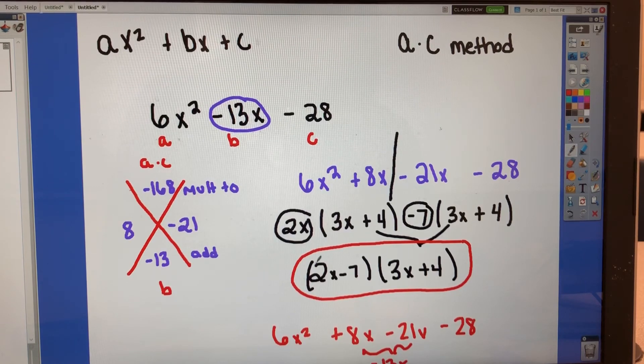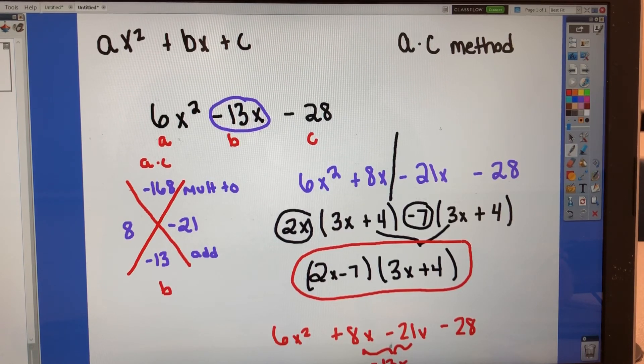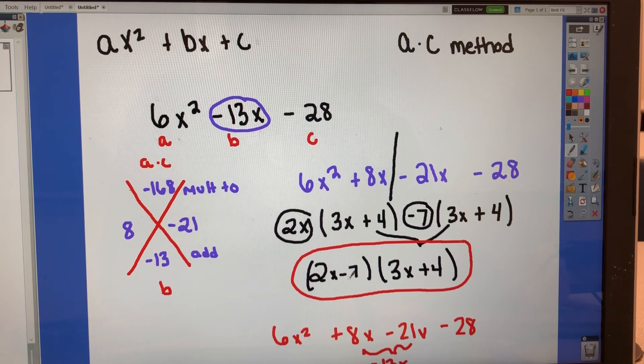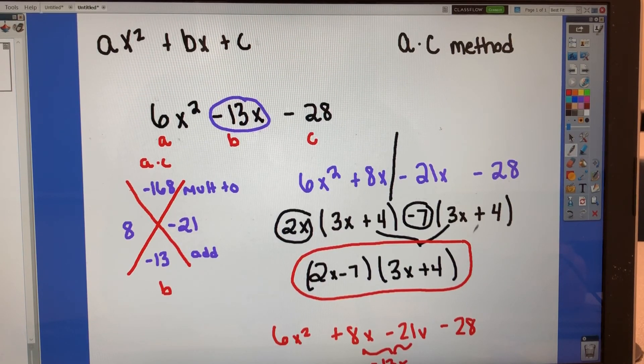So we've just factored, pulled it apart, put it back together. Your final answer here, 2x minus 7, 3x plus 4. In the next video, I'm going to show you the different method, which is the mistake method.